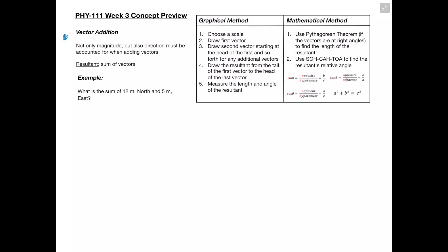The example asks: what is the sum of 12 meters north and 5 meters east? I like to start by drawing out a picture. We have a vector going 12 meters north followed by one going 5 meters east. What we're looking for is the displacement from the point we started at to the point we ended at — this is our resultant. The graphical method has us draw everything to scale, then use a ruler to measure the resultant's length.